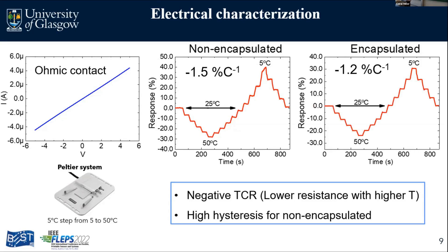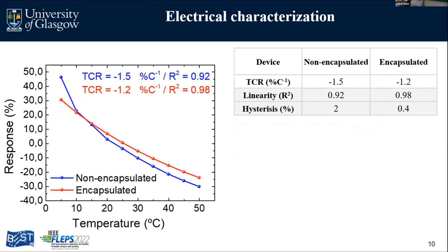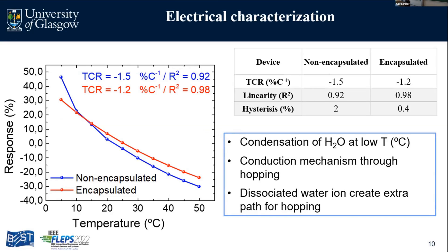We fix this through encapsulation. By encapsulation we reduce the sensitivity slightly, but we really fix the hysteresis problem — you can see the steps of recovery are really reaching the states where they were. In this graph comparing the cycle curves of the responses against temperature, the encapsulated device has 0.98 linearity, whereas the non-encapsulated device loses a lot of linearity especially at lower temperatures. In summary, sensitivity for the non-encapsulated was -1.5% and for the encapsulated -1.2% per Celsius, but we greatly reduced hysteresis and improved linearity.